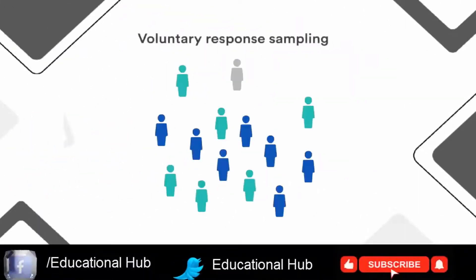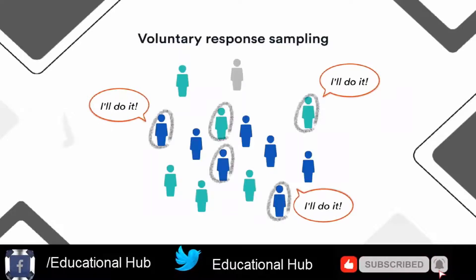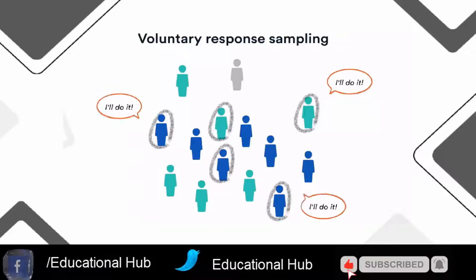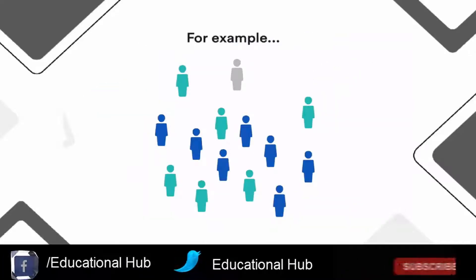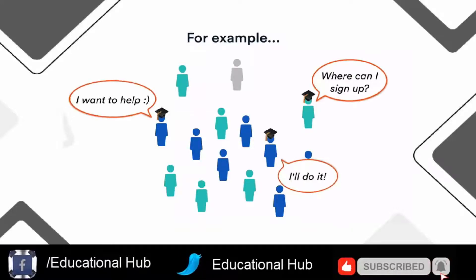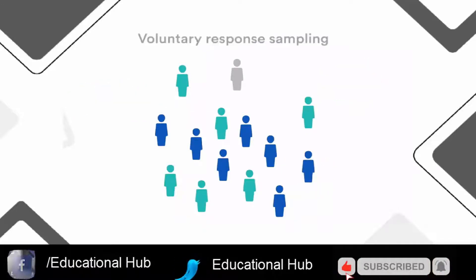2. Voluntary response sampling. Similar to a convenience sample, a voluntary response sample is mainly based on ease of access. Instead of the researcher choosing participants and directly contacting them, people volunteer themselves — for example, by responding to a public online survey.